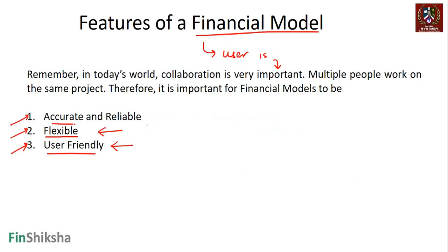Accuracy and reliability is straightforward. If you build a model that is incorrect or doesn't work properly, that's a clear issue. All of us will agree that a model throwing out incorrect numbers is undesirable. If you are calculating operating profit margin, you should be calculating it accurately and reliably. You can't have a model that's not giving you reliable data — that's a given in any case.